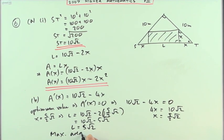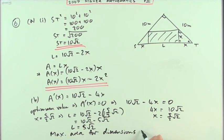Maximum area for dimensions: L equals 5 root 2, x equals 5 over 2 root 2.